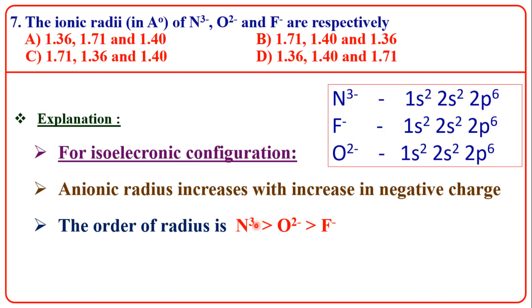So the order is: N³⁻ is greater than O²⁻, and O²⁻ is greater than F⁻. N³⁻ has the largest size among the isoelectronic anions.